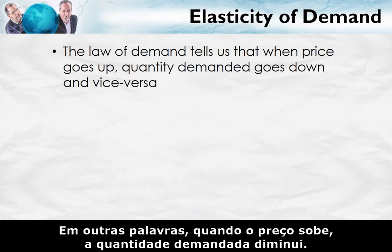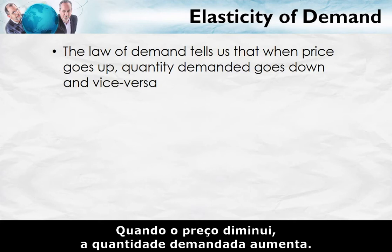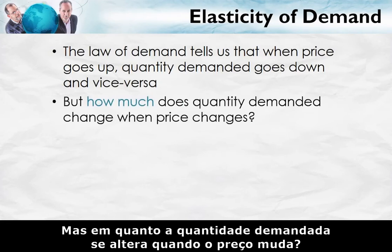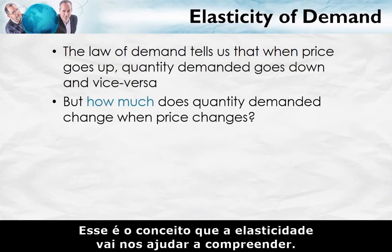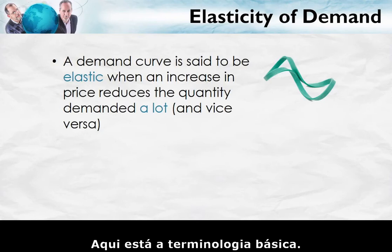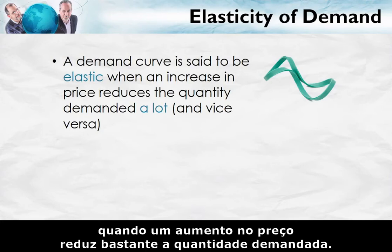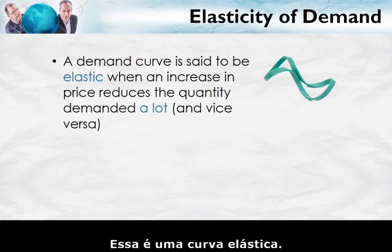Demand curves slope down. In other words, when the price goes up, the quantity demanded goes down; when the price goes down, the quantity demanded goes up. But how much does quantity demanded change when the price changes? When the price goes down, does the quantity demanded increase by a lot or by a little? That's the concept that elasticity is going to help us understand. A demand curve is said to be elastic when an increase in price reduces the quantity demanded by a lot, and similarly when a decrease in price increases the quantity demanded by a lot.